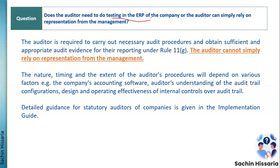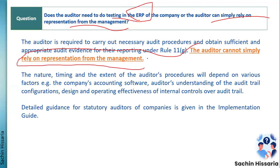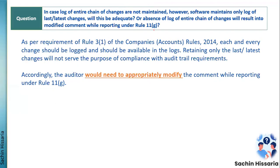Next question: do auditors need to do the testing of the company's ERP, or can they simply rely on management representation? Obviously you will not rely blindly on management representation. Under Rule 11G, you take a separate Management Responsibility Letter (MRL) from management, but you also need to do independent testing of the ERP application to check whether the audit trail feature was enabled or not.